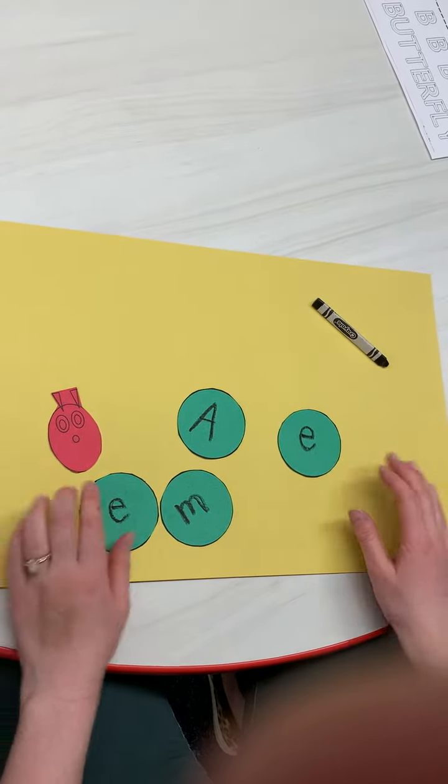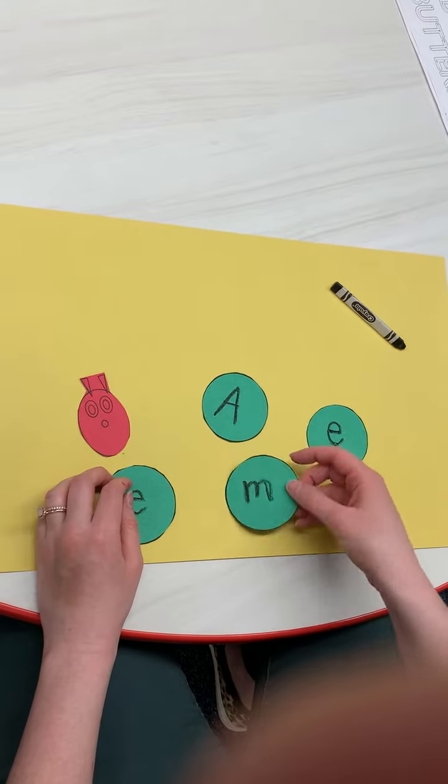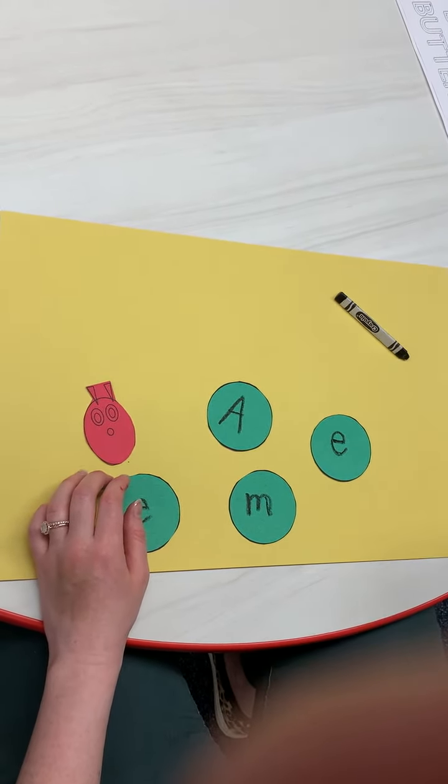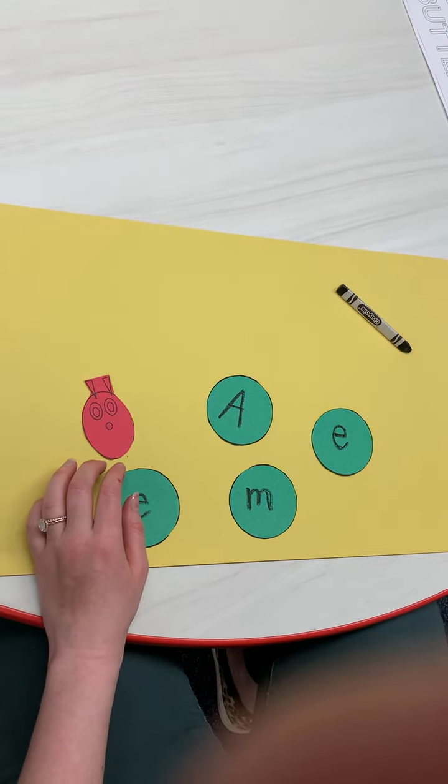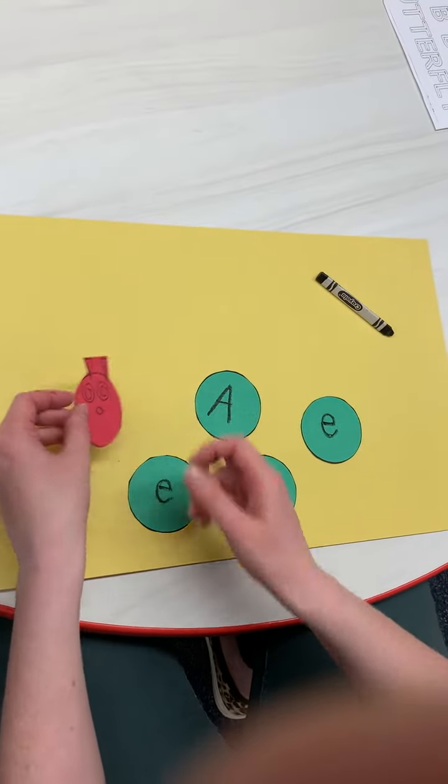Okay, for this activity you are going to need the little green circles that are in your packet. You can cut them out, or you can have your child cut them out if they want a little more cutting practice. And then I kind of just cut out this little cute...